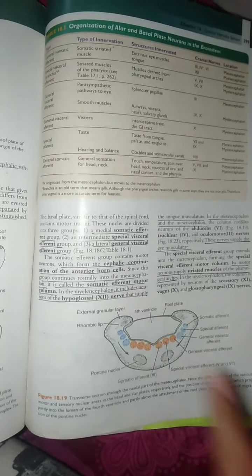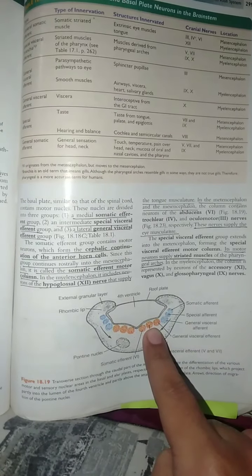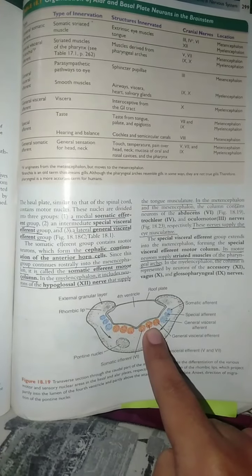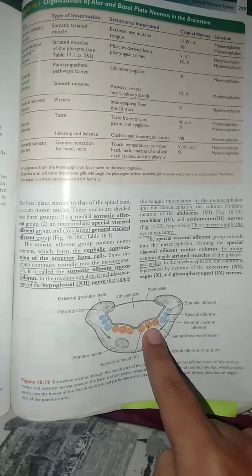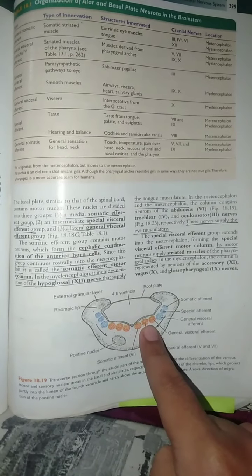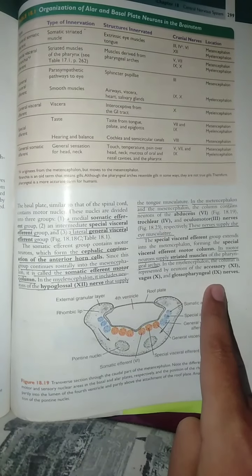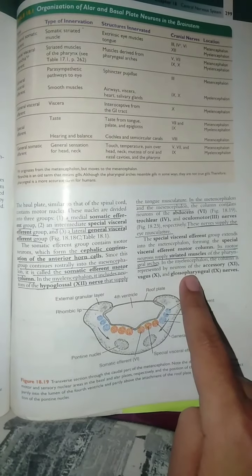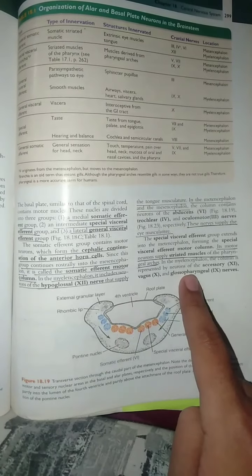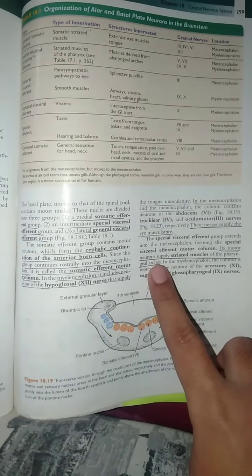Oculomotor, trochlear, and abducens nerves are part of mesencephalon. We have special visceral efferent with neurons present. We have the glossopharyngeal nerve and accessory nerve. We have cranial nerves 3, 4, and 6 with neurons present.